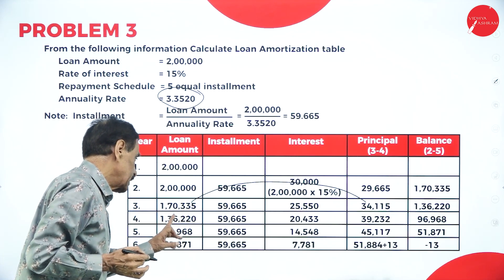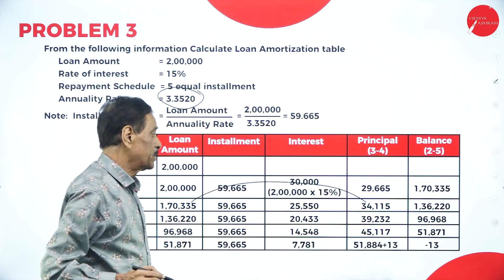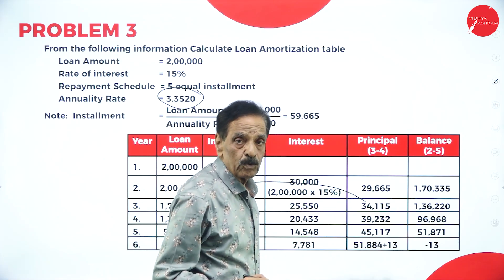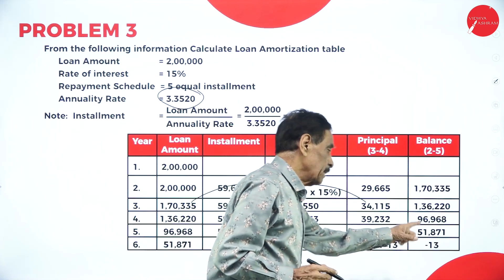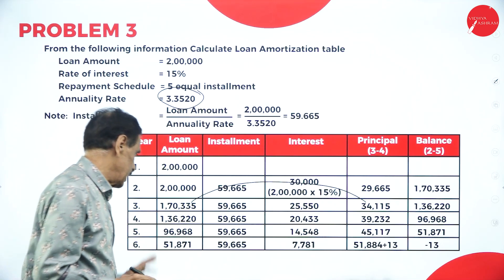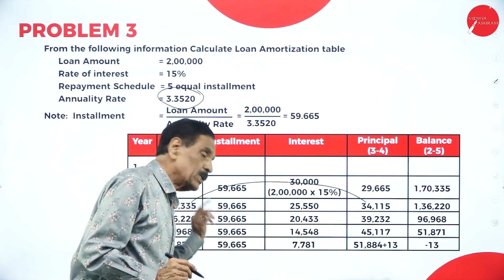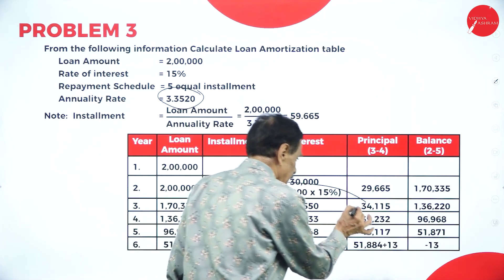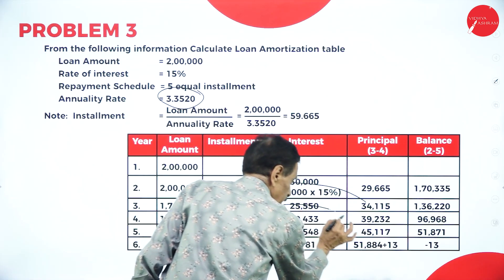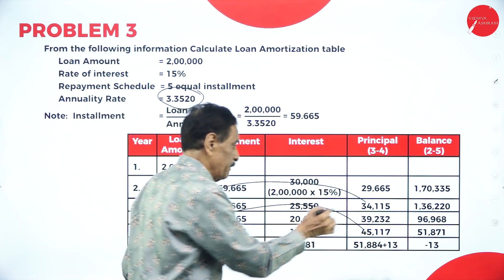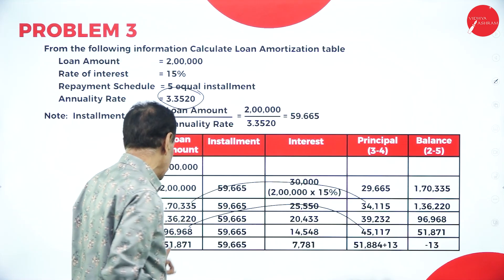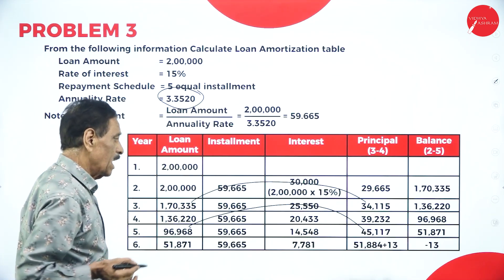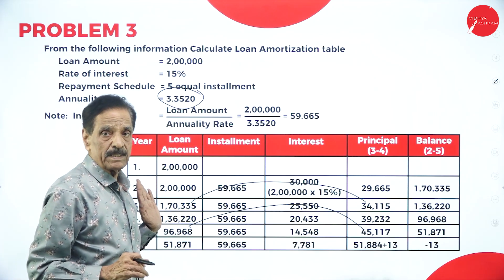Year 3: balance 1 lakh 36,220; installment 59,665 is constant; interest is 20,433; principal payment 39,232; balance 96,960. Year 4: balance 96,960; installment 59,665; interest is 14,540; principal money to be paid; balance 51,871. Year 5: balance 51,871 is paid off. There is a minor rounding difference of minus 13, which is negligible.